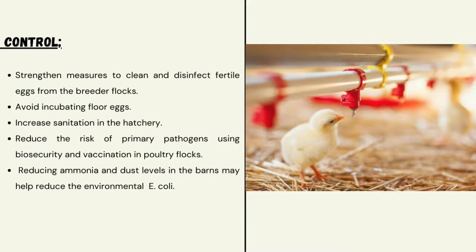Control of colibacillosis: strengthen measures to clean and disinfect fertile eggs from breeder flocks, avoid incubating floor eggs, and increase sanitation in the hatchery. Reduce the risk of primary pathogens using biosecurity and vaccination in poultry flocks. Reducing ammonia and dust levels in the house may help reduce environmental E. coli.